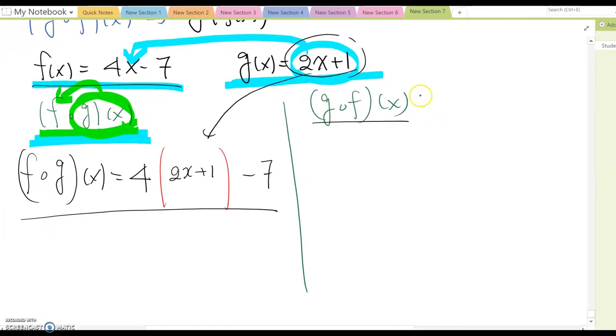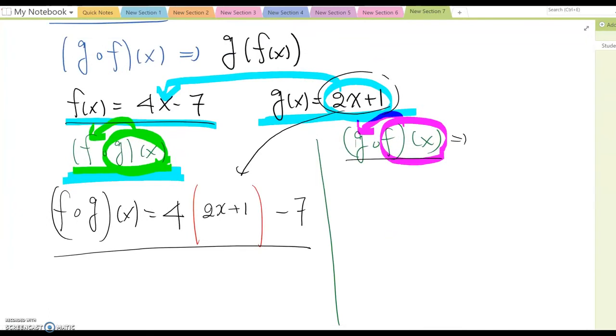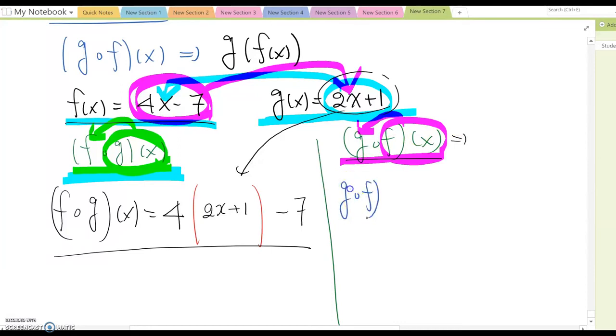This means we are plugging f(x) into g(x) here. So similarly what we have done here, this f(x) will be going into this. So as you see this purple marker g open dot f(x) function will follow g(x) format. So this becomes g open dot f(x) equal to 2x g open dot f(x) plus 1 like that. And then this value will go here. Therefore inside must be 4x minus 7.